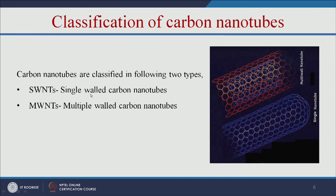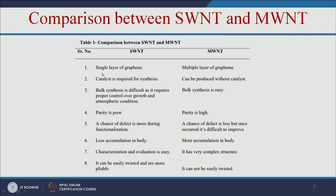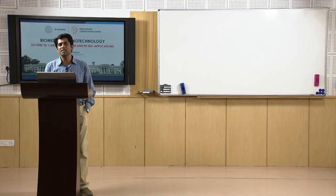Let us see the difference between single-walled carbon nanotubes and multi-walled carbon nanotubes. Single-walled is a single layer of graphene and multi-walled is multiple layers. For synthesis, single-walled needs a catalyst, whereas multi-walled can be produced without one. Bulk synthesis is difficult for single-walled but easy for multi-walled, and purity is poor for single-walled but high for multi-walled. Importantly, single-walled nanotubes accumulate less in the body while multi-walled accumulate more, so you choose based on your application.